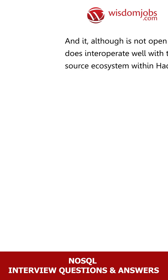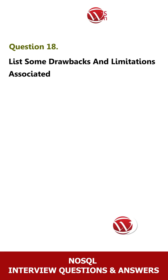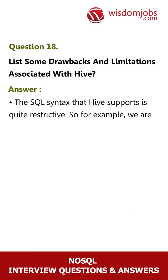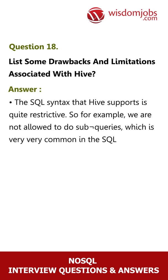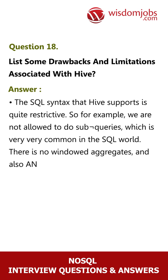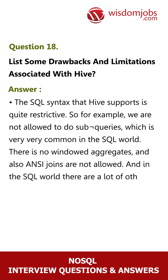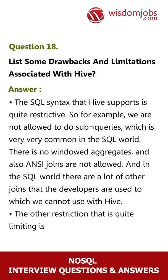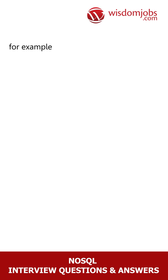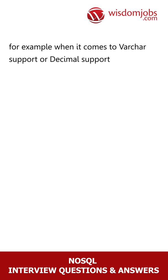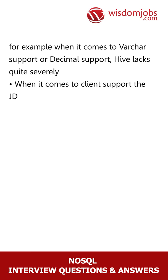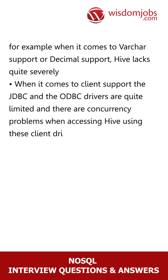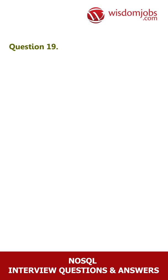Question 18: List some drawbacks and limitations associated with Hive. Answer: The SQL syntax that Hive supports is quite restrictive — for example, sub-queries are not allowed, which is very common in the SQL world. There are no windowed aggregates, and ANSI joins are not allowed. Many other joins that developers are used to in the SQL world cannot be used with Hive. The data types supported are also limiting — for example, Hive lacks severely in varchar and decimal support. When it comes to client support, the JDBC and ODBC drivers are quite limited and there are concurrency problems when accessing Hive using these client drivers.